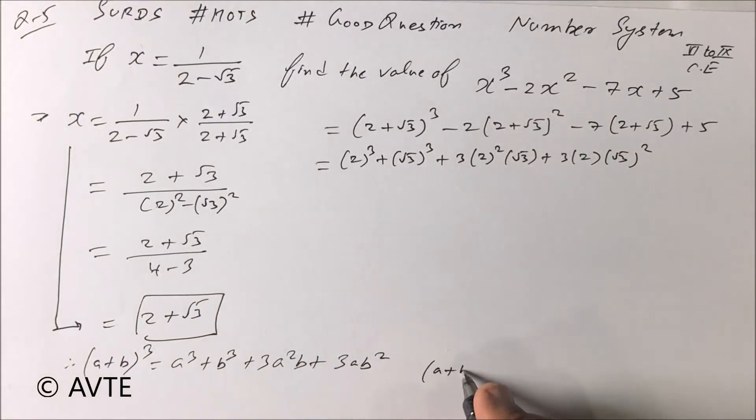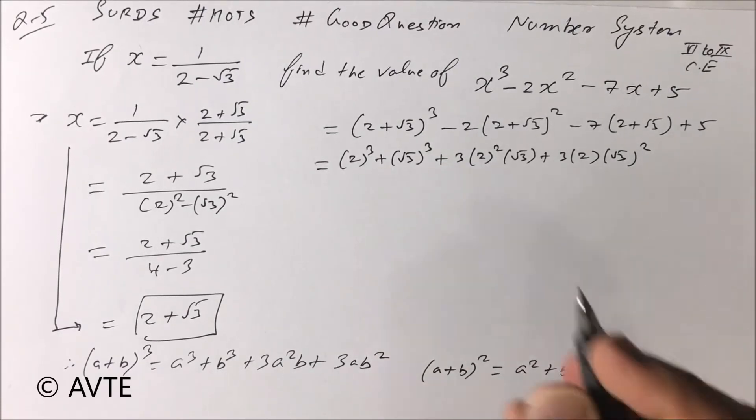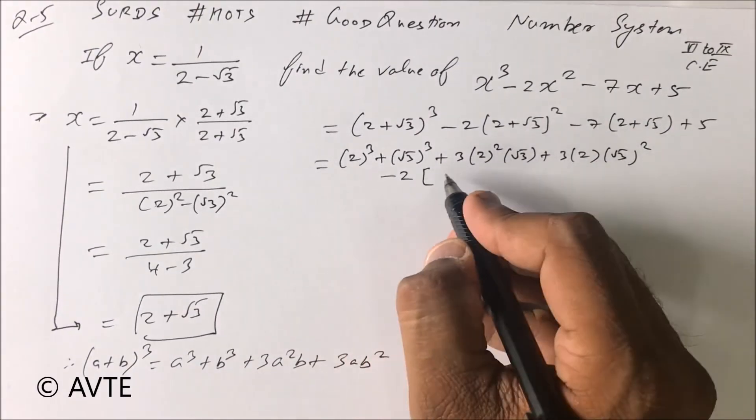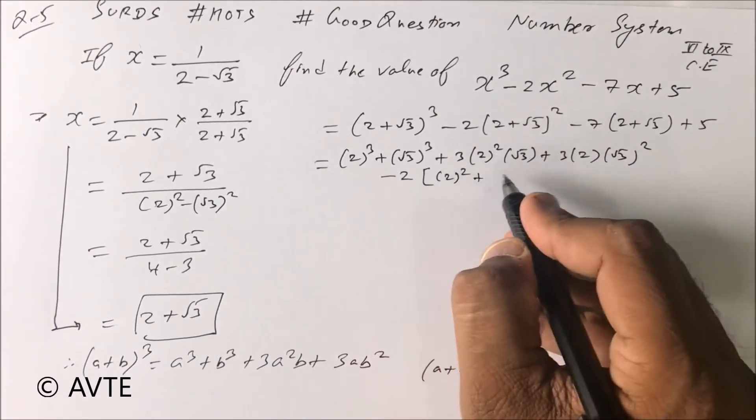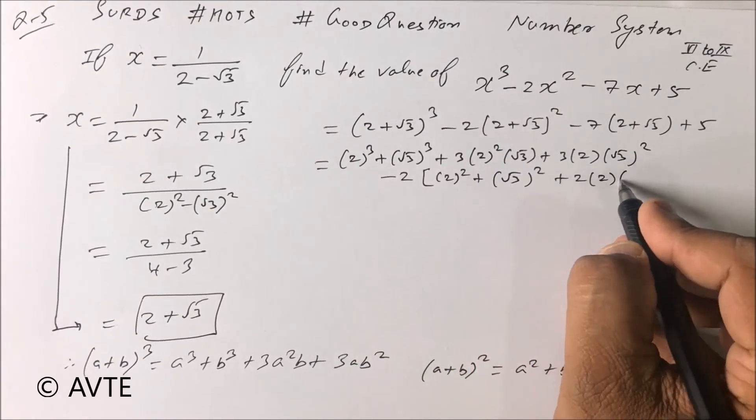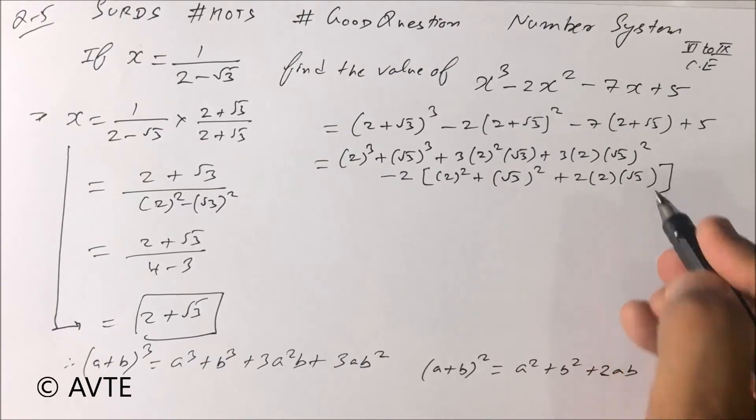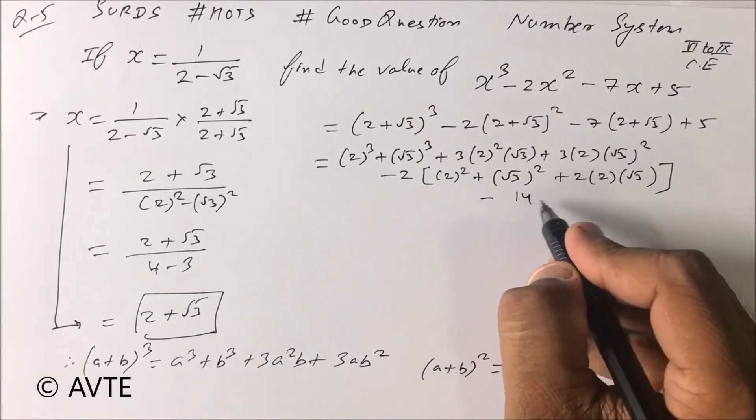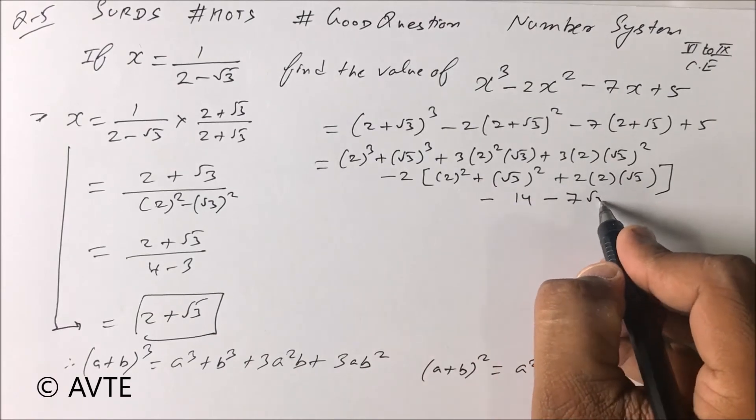Then we use the formula (a plus b)² - that is a² plus b² plus 2ab. So this is (a plus b)² minus 2 in bracket: 2² plus (root 3)² plus 2ab bracket closed. Now it's a simple multiplication: minus 7 into 2 is 14 minus 7 root 3 plus 5.